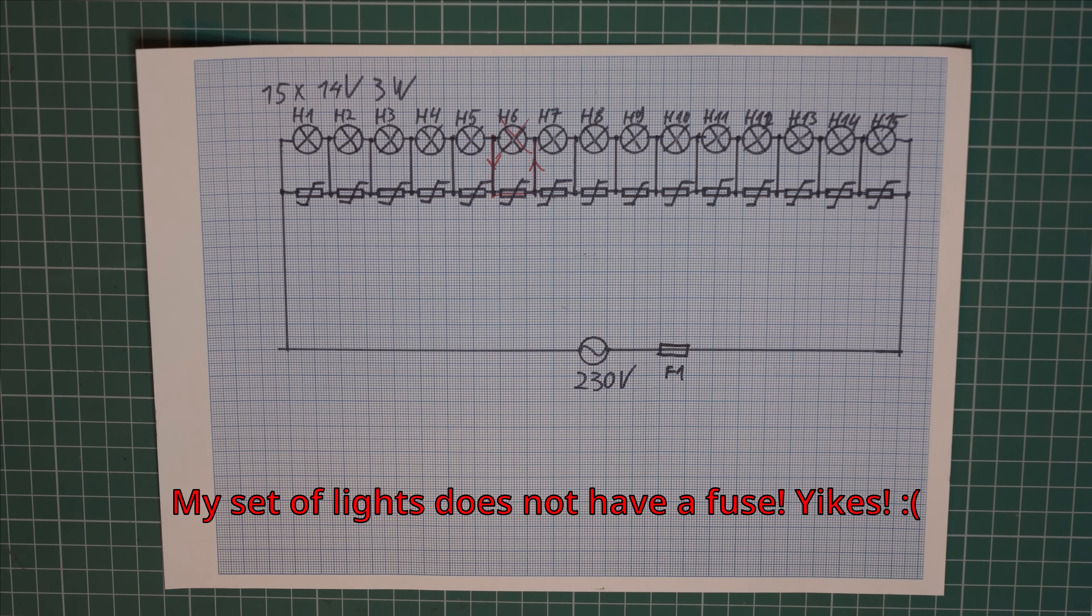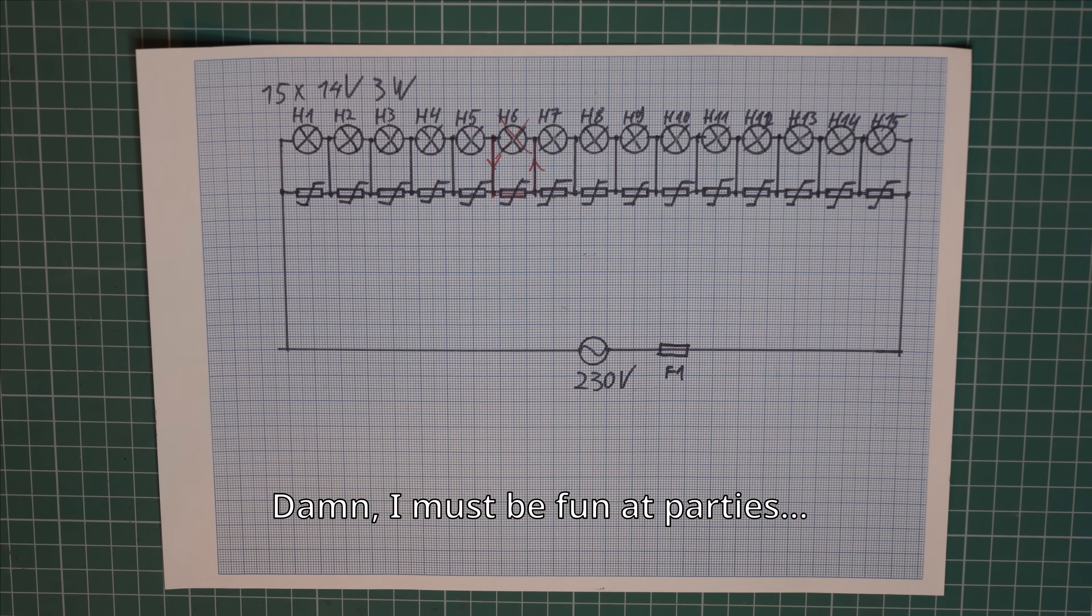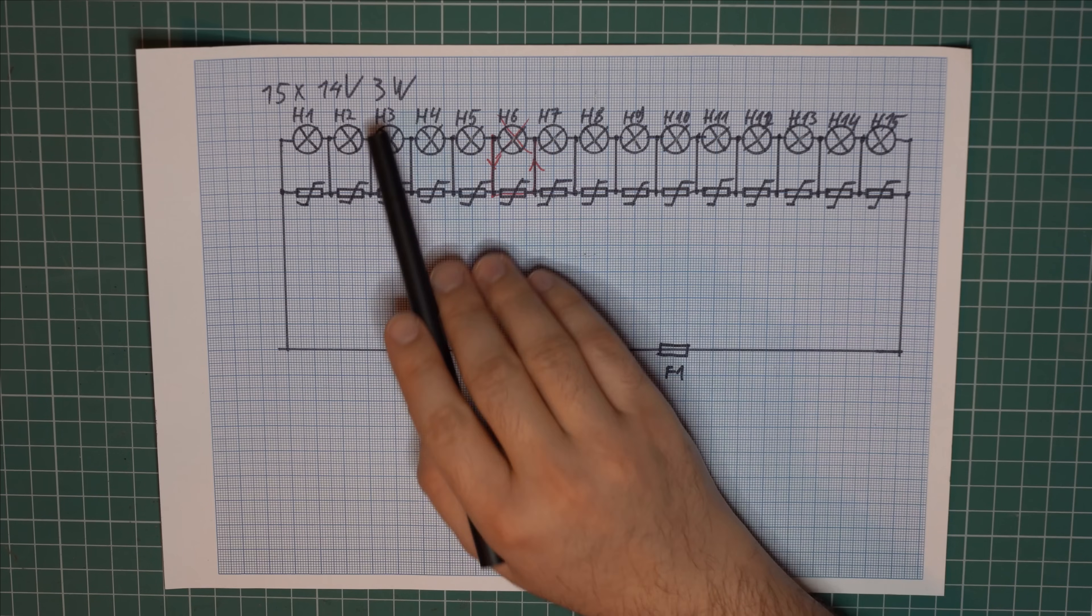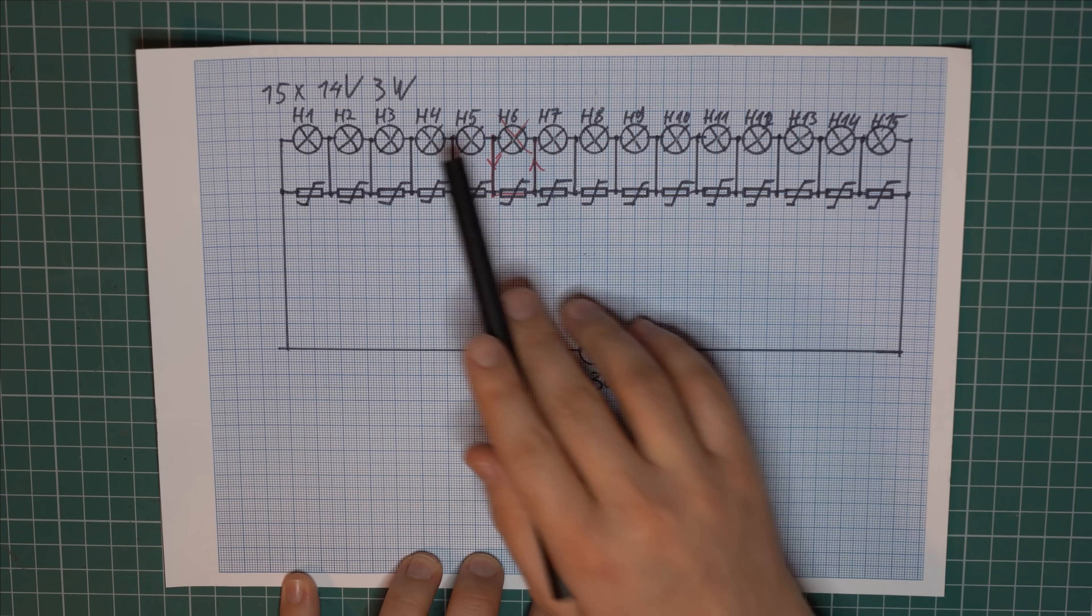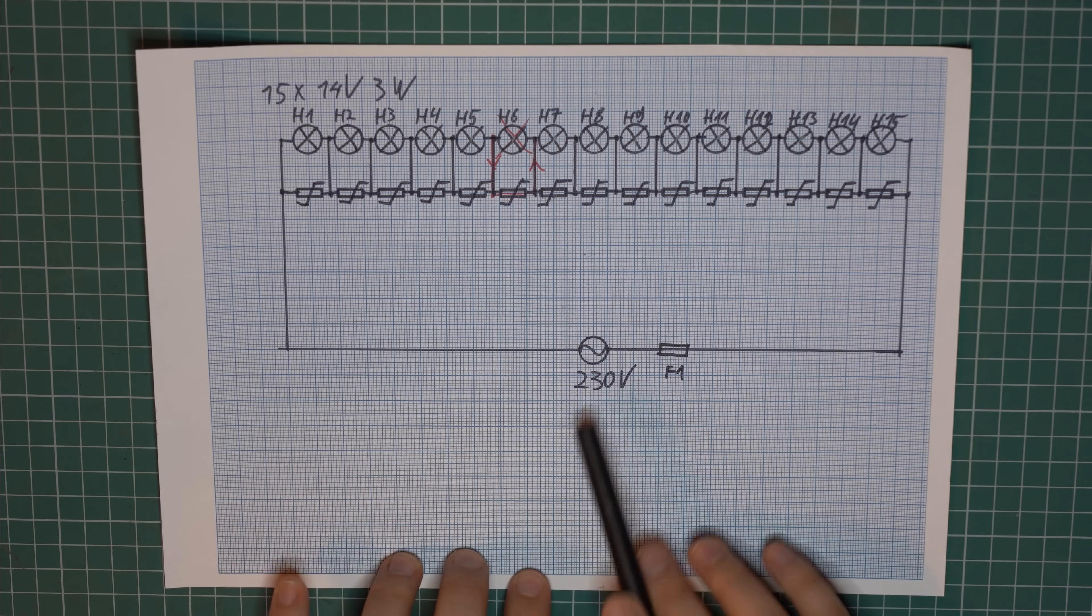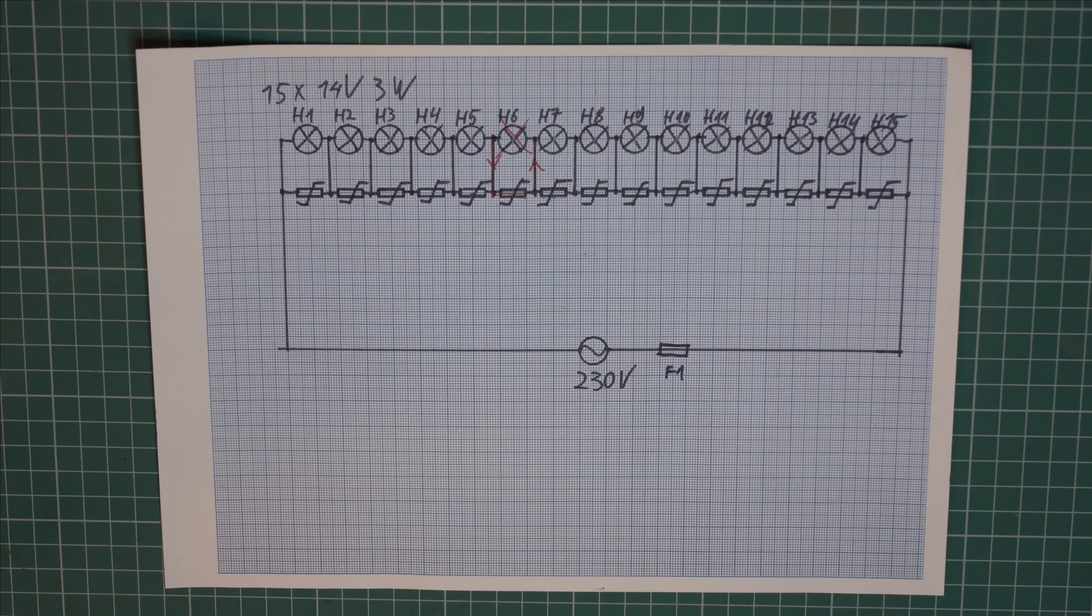And now just for fun let's calculate the power for the whole string. I'm doing this because on some Facebook groups I've seen some debates about this. Because people assume that if one light draws 3 watts at a reduced voltage then the whole string draws 3 watts at the full mains voltage. But that's not how things work. So let me prove that.